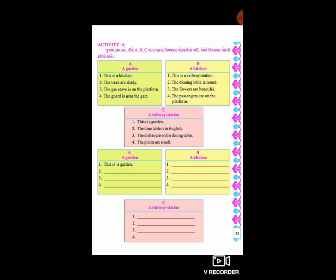અને C છે - છેલ્લું box - ગુલાબી રંગ થી દર્શાવ્યેલું - તે છે railway station. તો એ garden, kitchen, railway station - ચાર-ચાર વાક્ય વાંચવાના, એ વાક્ય ક્યાં set થશે - garden માં, kitchen માં, કે railway station માં.